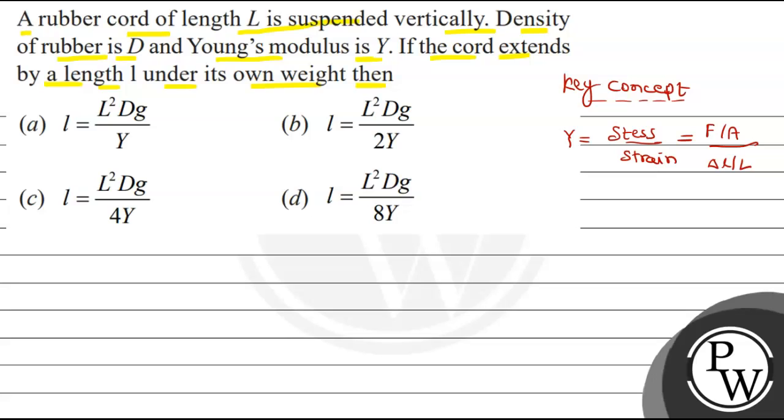Now we have to look at the solution. We have to consider the diagram of the rubber cord which has length L. This is the own weight MG where it acts downward. This is the center of gravity, the center of mass. Force equals mass into acceleration due to gravity.